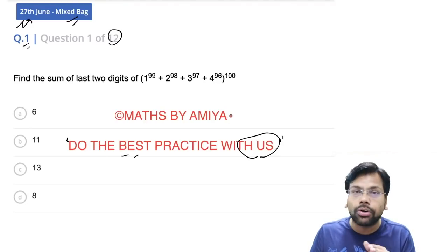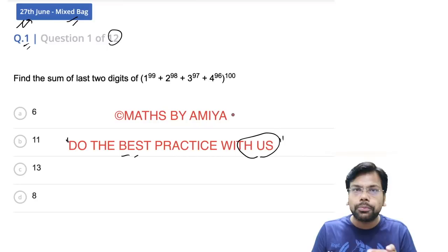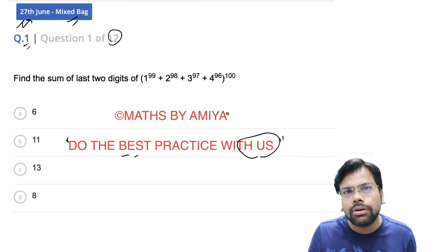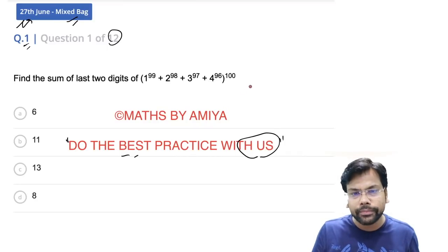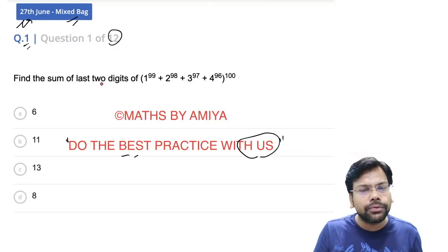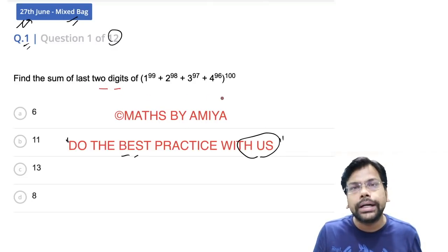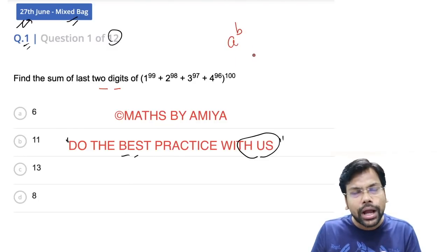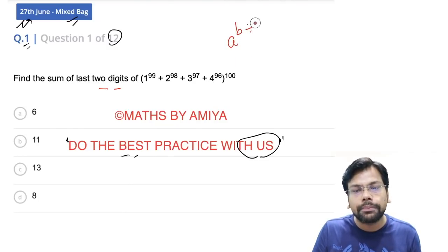First, I'll discuss the concept. If you know the concepts, you can solve this question within seconds. The question is: find the sum of last two digits. First, we need to find the last two digits. And the question is about powers, so whenever you have powers, we need to divide power by 20.